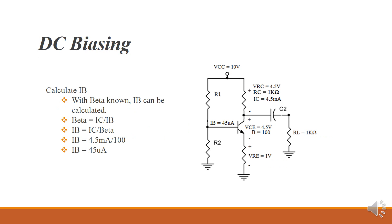Let's use a beta of 100 for this example. And with beta known, now we can calculate IB. If beta is equal to IC over IB, we can do some algebra there and figure that IB is equal to IC divided by beta. So that gives us 4.5 milliamps divided by 100. That makes IB equal to 45 microamps.